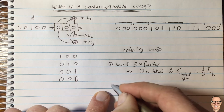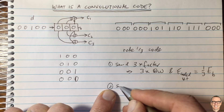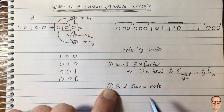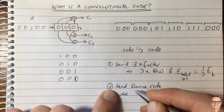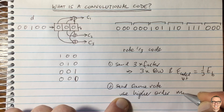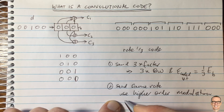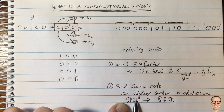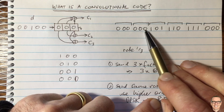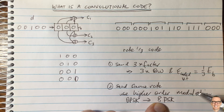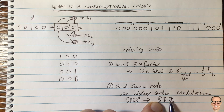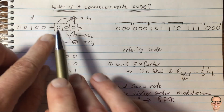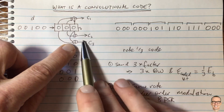This approach requires three times the bandwidth, but there's another option: send at the same rate but use a higher-order modulation format. For example, instead of BPSK — which sends one bit per time slot — you would move to 8PSK, which sends three bits per time slot. Of course, with 8PSK at the same power, the symbols are closer together and harder to tell apart, so the error rate of the symbols is higher. But because of the structure in the coded sequence, you can correct most of those errors — and that's the main idea of channel coding.